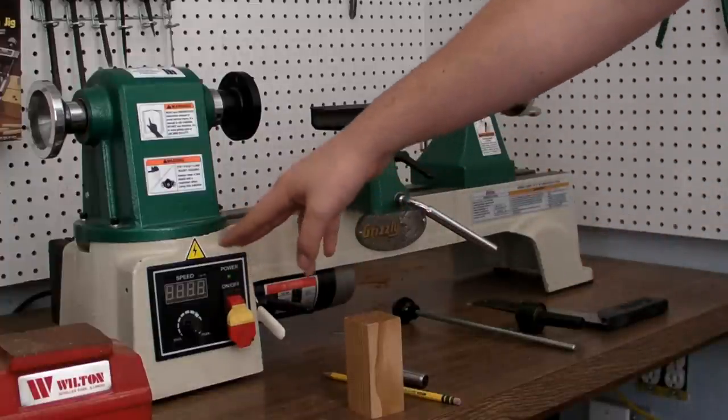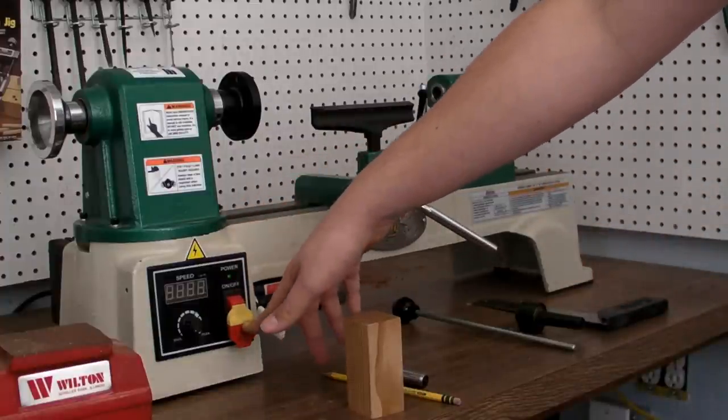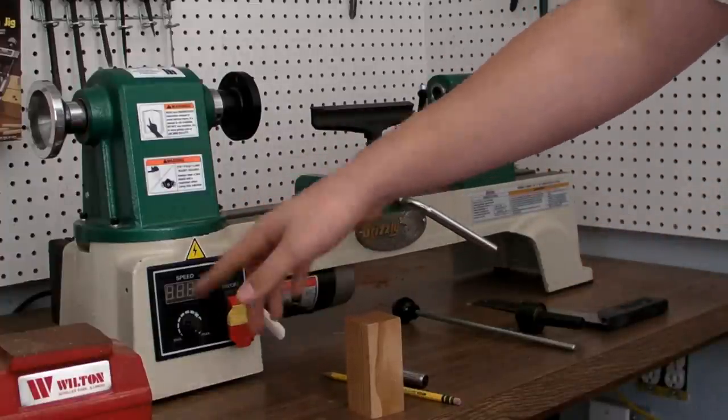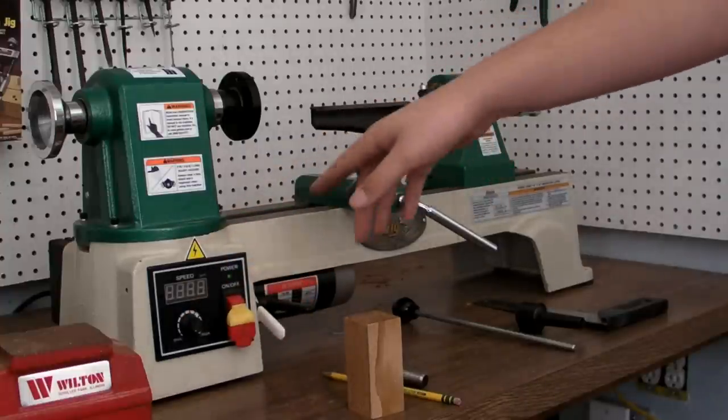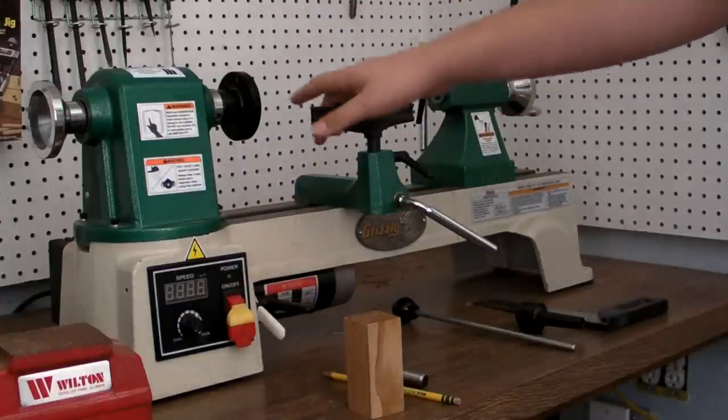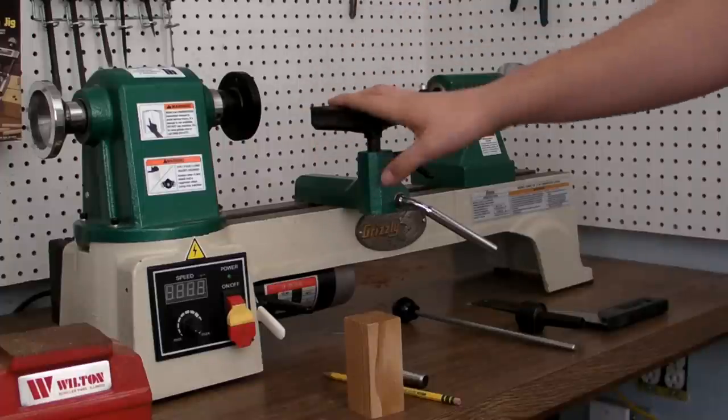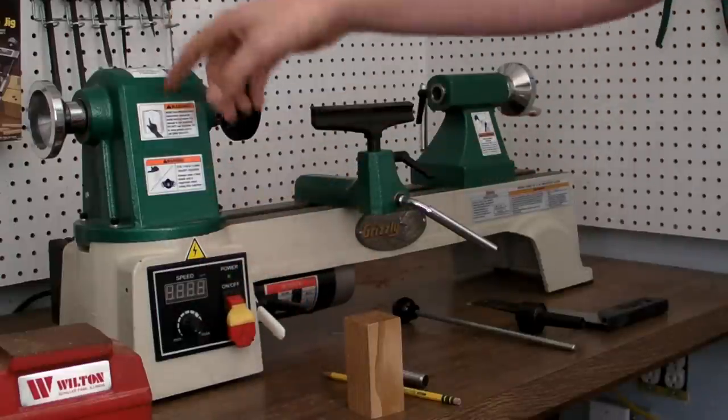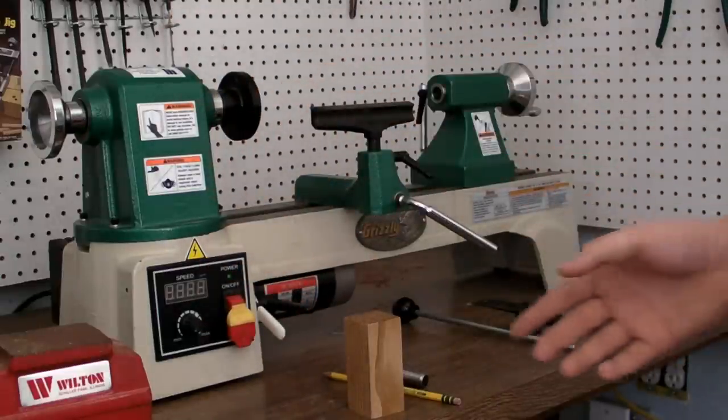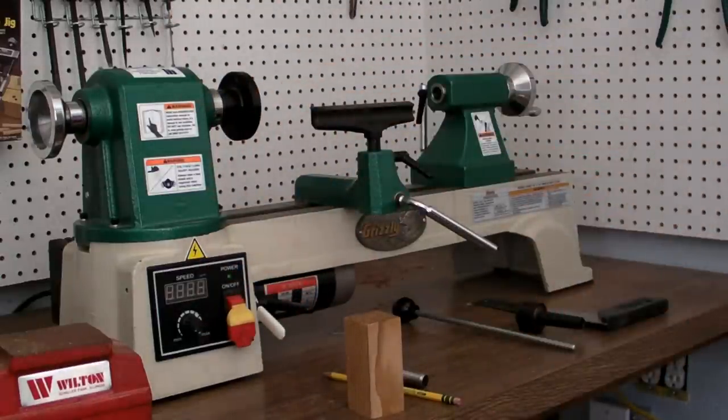You'll notice there's this little control panel down here. This has the on-off switch, which all lathes have. It also has a variable speed control. This will change the amount of power being given to the work piece, which will change the speed that it rotates. Not all lathes have this. Some lathes you just change the order of the belt, which I'll go over later, and that's how you will change the speed.